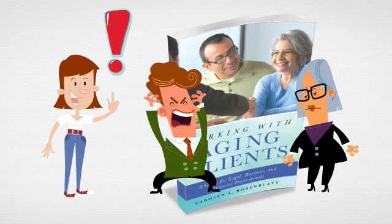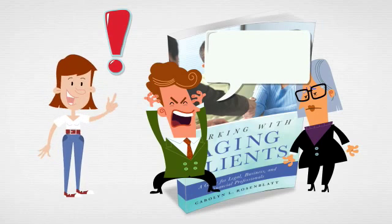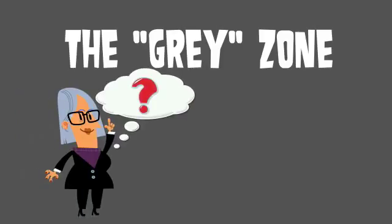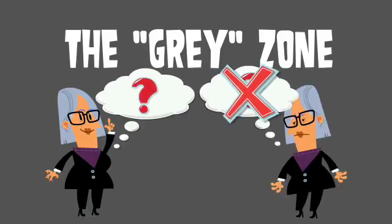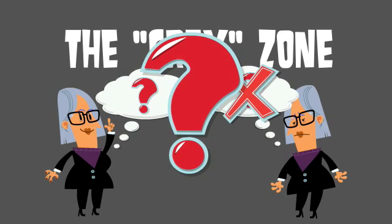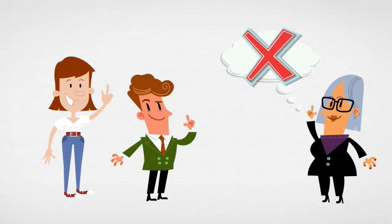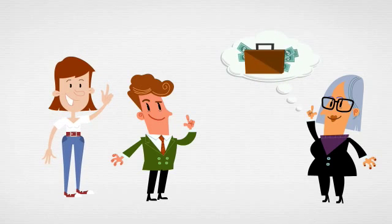One of the most important parts of the discussion is what I call the gray zone. That's that place between having full capacity for decisions and not having full capacity. It can be very confusing. I walk you through how to tell when your client is impaired and whether you should allow them to make important decisions or not.